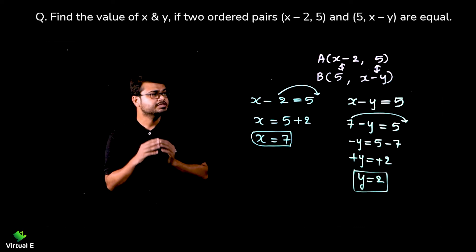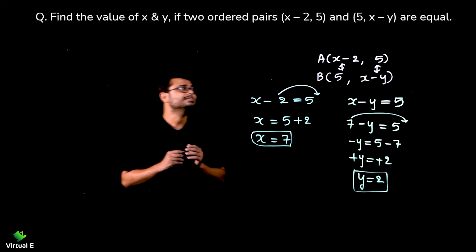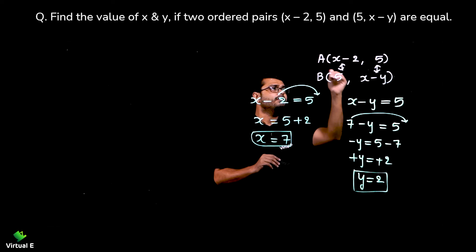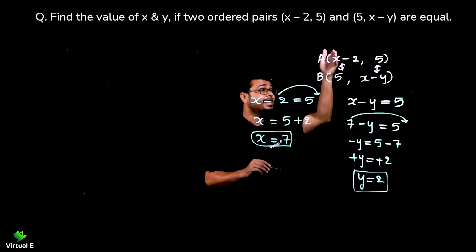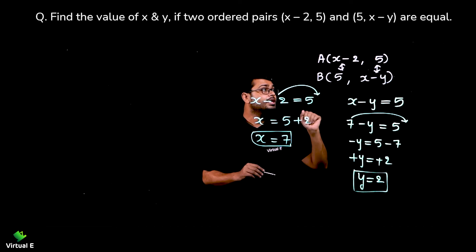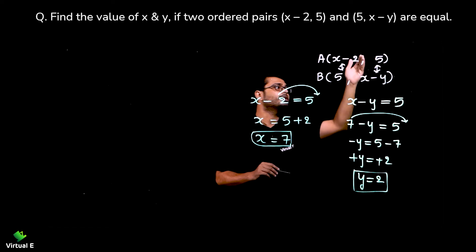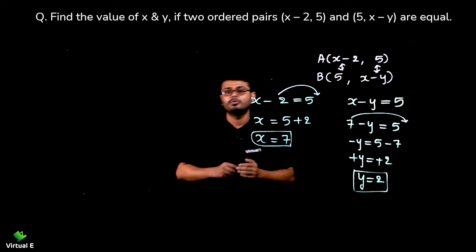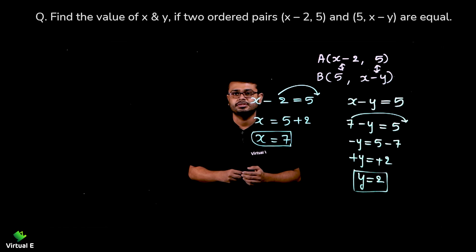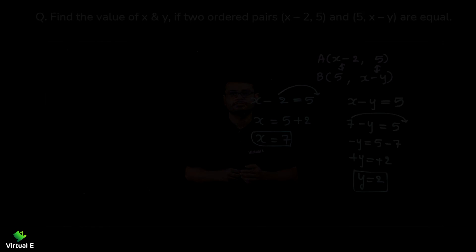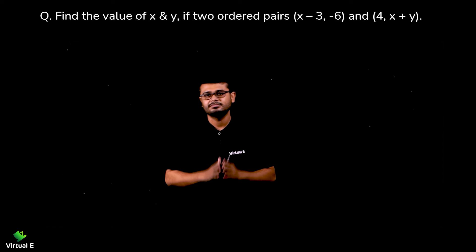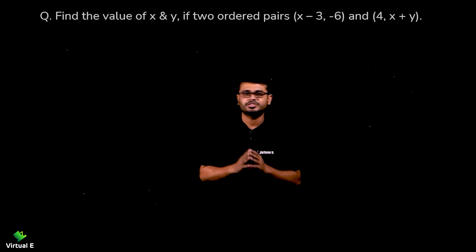So the value of y is 2 and the value of x is 7. Remember, we used the concept that if two points are equal, their x-coordinates are equal and their y-coordinates are equal. Let's do the next question.